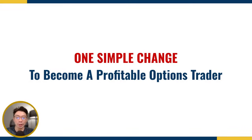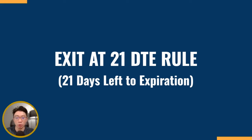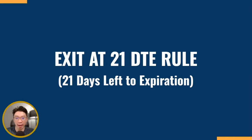So in today's video, I'm going to be sharing with you one simple change that you can do to become a profitable options trader. This one simple change is basically to use the exit at 21 DTE rule. I'm going to go very much in depth in this video, as well as show you some studies and statistics as to why exiting at 21 DTE can help you get a much better performance in options trading.